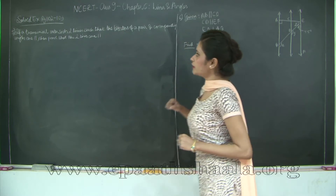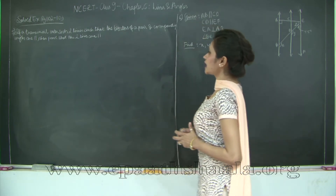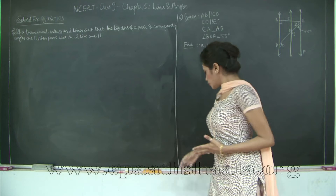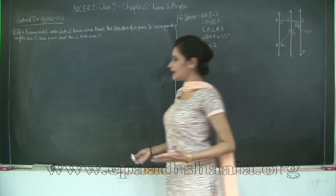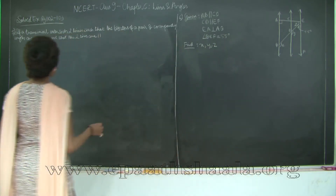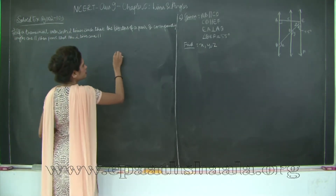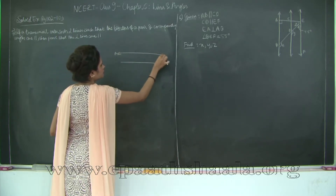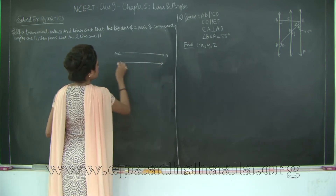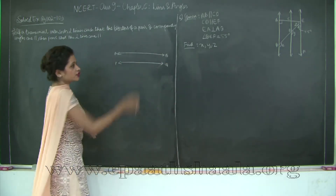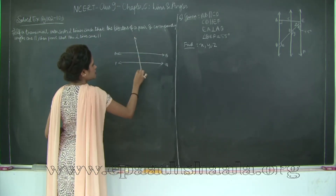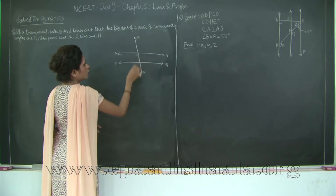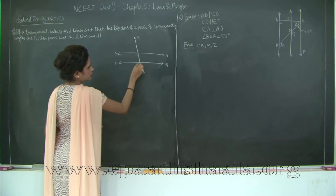Question number 5: If a transversal intersects two lines such that the bisectors of the pair of corresponding angles are parallel, then prove that the two lines are parallel. We will first draw the diagram and understand what needs to be done. I will call my lines AB and PQ, and I have a transversal MN intersecting these two lines at points O and R respectively.